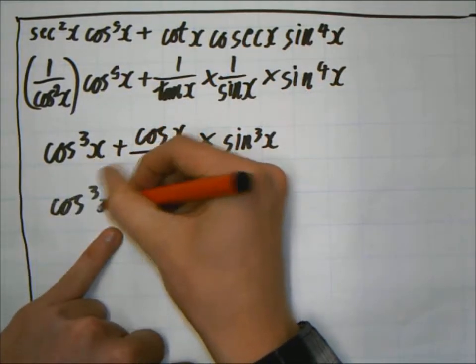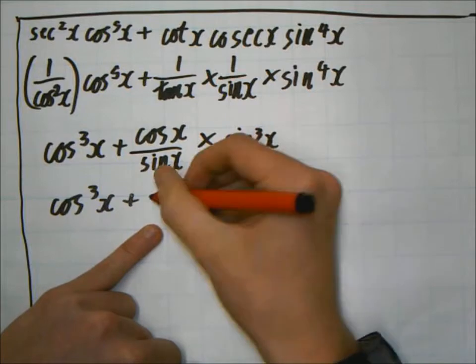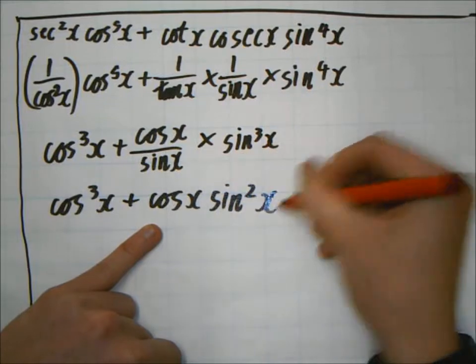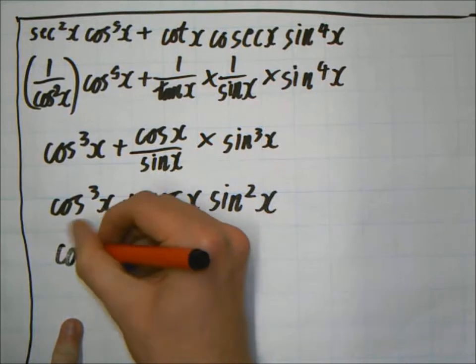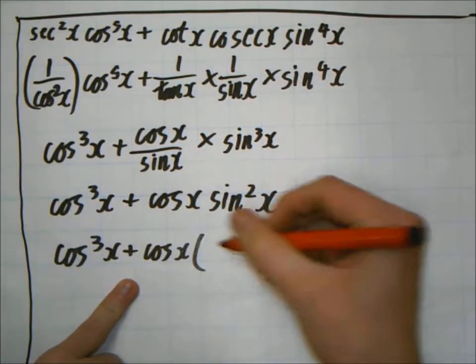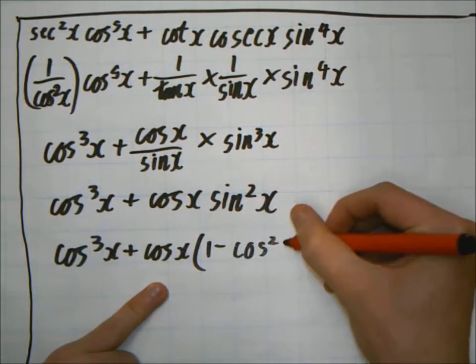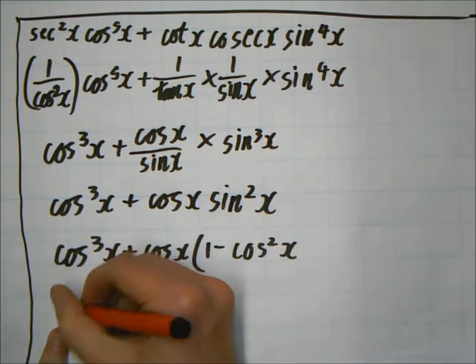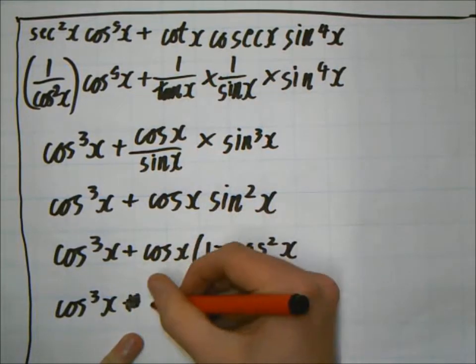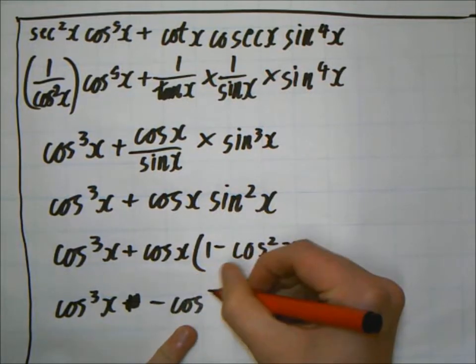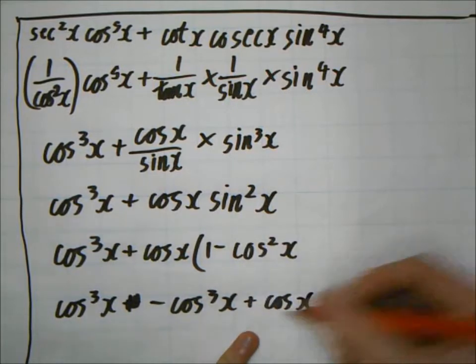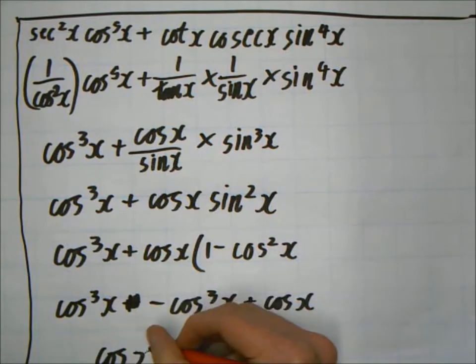And then these will then cancel down again, so you'll get cos 3x plus cos x times sin squared x. And we know sin squared can be written as 1 minus cos squared x. And this gives us cos 3x plus cos x. Excellent.